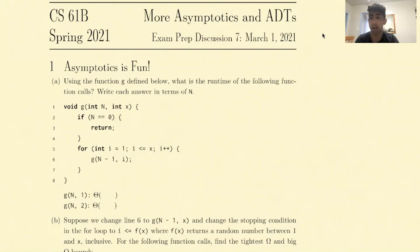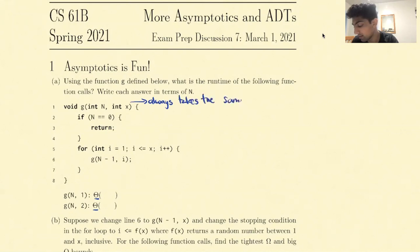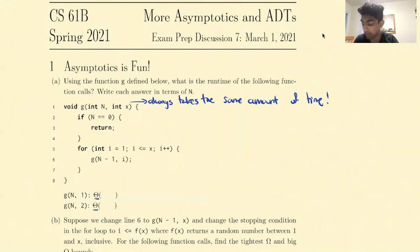Whenever we have some sort of bound that's already given to us, we should always understand why we can use that bound. In this context, why can we use a theta bound to describe the runtime of g(n, 1)? A theta bound is telling us that the function g always takes the same amount of time. That's what a theta bound is indicating to us.